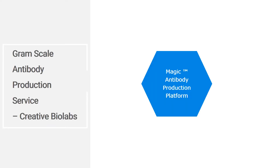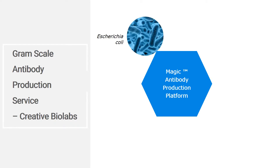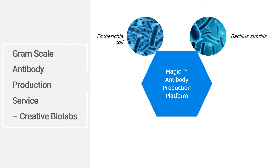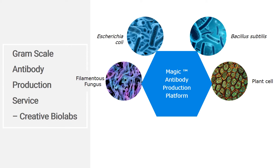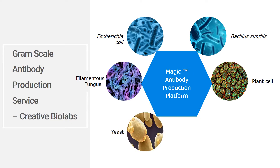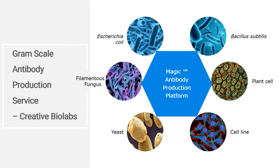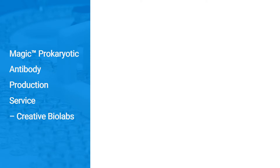Creative BioLabs has established a magic antibody production service to satisfy almost all requirements across different producing systems and every range of producing quantity and quality. In this novel platform, there are a series of expression hosts to choose from to meet your unique requirements, such as Escherichia coli, Bacillus subtilis, filamentous fungus, plant cell, yeast, and animal cell lines. There are some challenges in the production of recombinant antibody, whatever the expression system.